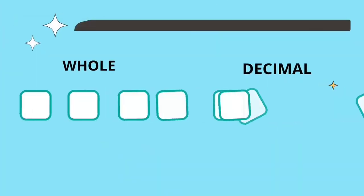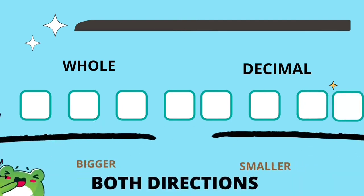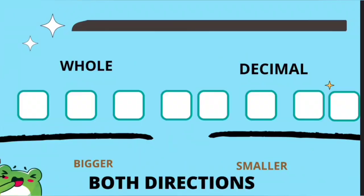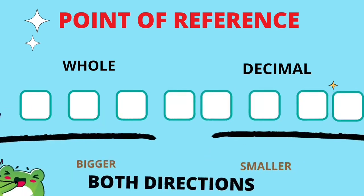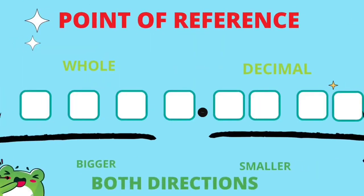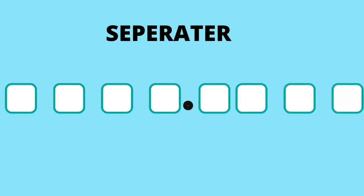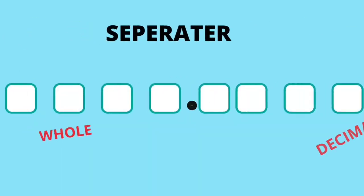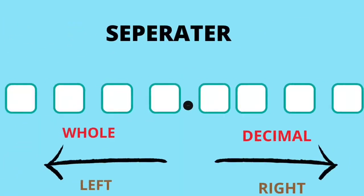That's an excellent question. We have a problem: the number places can extend in both directions. Before, when we had only whole number places extending in just one direction — to the left — we knew the place furthest to the right was always the ones place. But now that number places extend in both directions, we need a new way to tell which place is which. What we need is a point of reference — a place we always start from. For that, we use a special symbol called the decimal point. The decimal point acts as a separator between number places used for counting whole numbers and those used for counting fractional values.